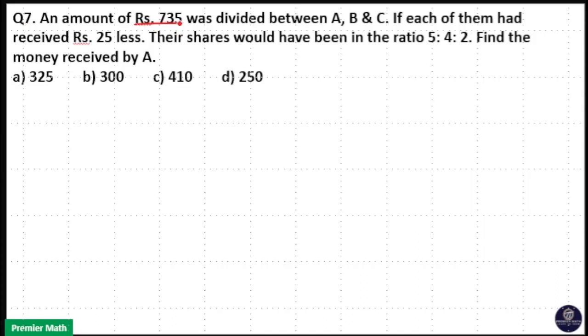An amount of Rs. 735 was divided between A, B, and C. If each of them had received Rs. 25 less, their shares would have been in the ratio 5:4:2. Find the money received by A.